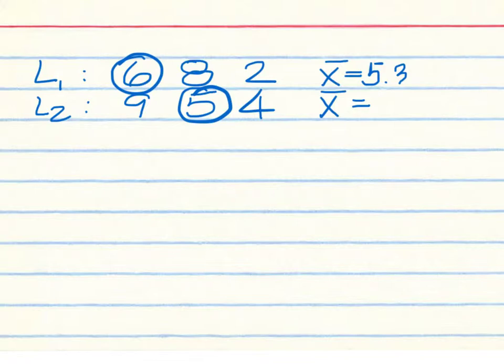For List 2: 9 and 5 is 14, plus 4 is 18, divided by 3 is 6. The standard deviation for List 1 would be next.